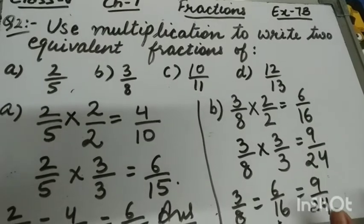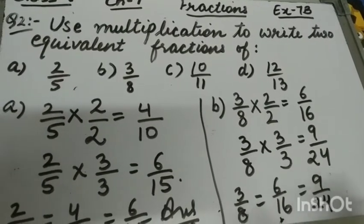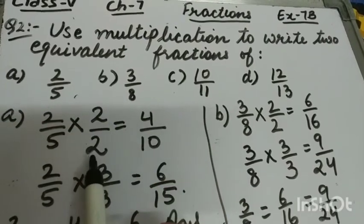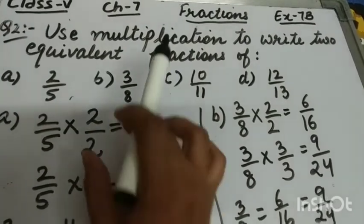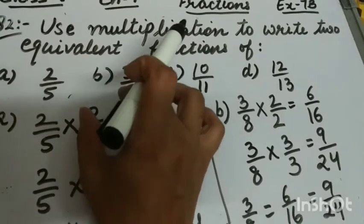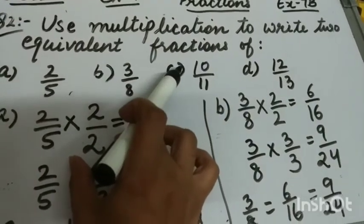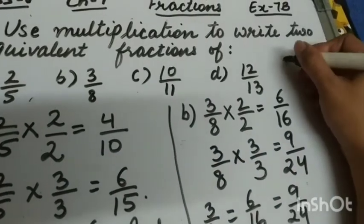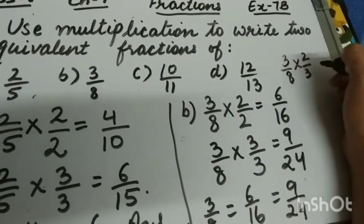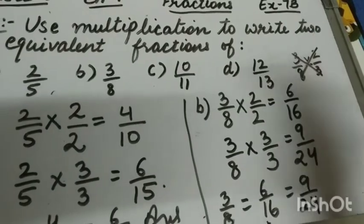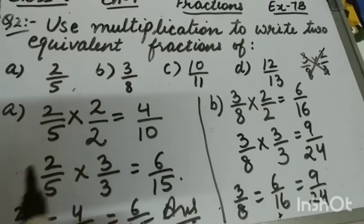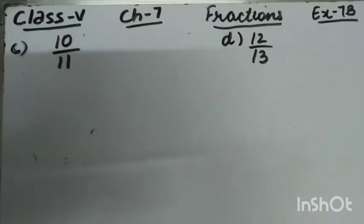You can multiply the numerator and denominator by any number, but one thing to keep in mind: the number you use to multiply the numerator must be the same as what you use for the denominator. For example, if you have 3 by 8, you cannot multiply the numerator by 2 and the denominator by 3 — that is totally wrong. In equivalent fractions, we always multiply the numerator and denominator by the same number.